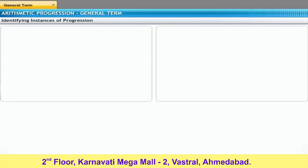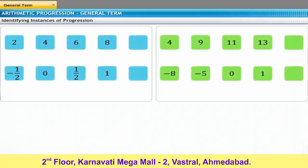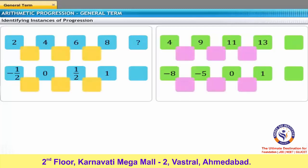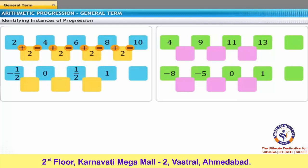To understand progression, take a look at some sequences. For example, consider the sequence 2, 4, 6, 8, and so on. You need to predict the 5th term in this sequence. If you analyze this sequence, you will find a constant between every two successive terms. For instance, 4 equals 2 plus 2, 6 equals 2 plus 4, 8 equals 2 plus 6. As you can see, the constant is 2. Therefore, the 5th term equals 2 plus 8, which equals 10.